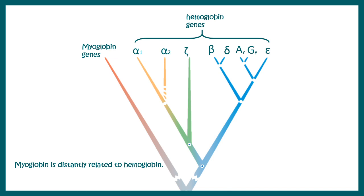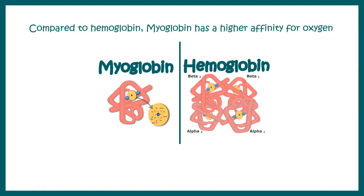You can see this evolutionary relationship in a cladogram. Myoglobin and hemoglobin have one thing in common: the heme group. This heme group is crucial for oxygen binding. Myoglobin's structure is fairly simple in comparison to hemoglobin.